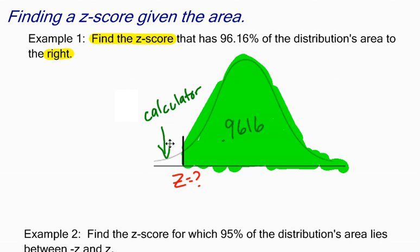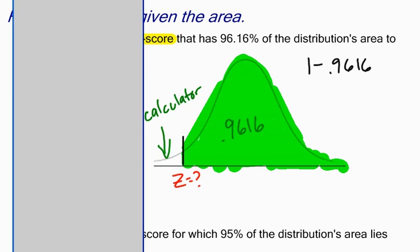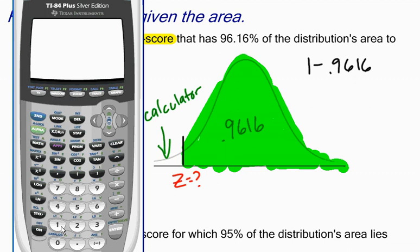I have been given 0.9616 to the right, but I need to go 1 minus 0.9616 to get the area to the left. So if I go back to my calculator, let's go 1 minus 0.9616, and that's going to give me 0.0384.